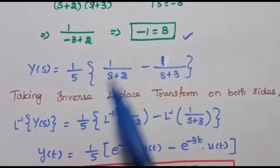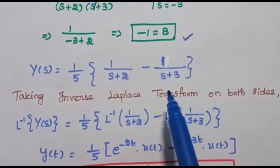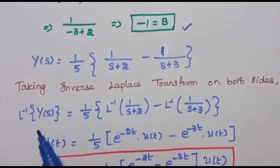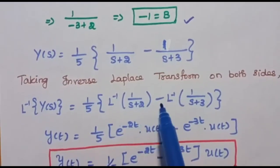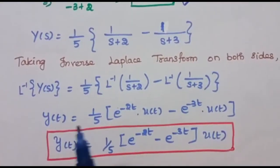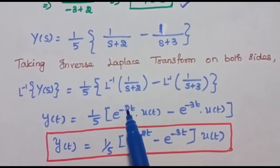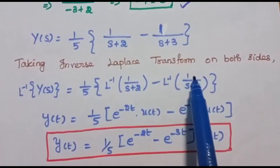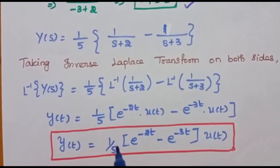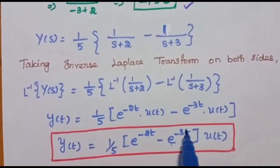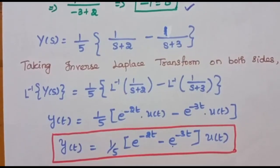Substituting A equals 1 and B equals minus 1 into the second equation, Y of s equals 1 by 5 times 1 over s plus 2 minus 1 over s plus 3. Taking the inverse Laplace transform on both sides, y of t equals 1 by 5 times e power minus 2t times u of t minus e power minus 3t times u of t. This simplifies to 1 by 5 times the quantity e power minus 2t minus e power minus 3t, all multiplied by u of t. This is the forced response of the given system.